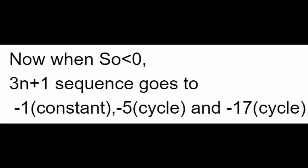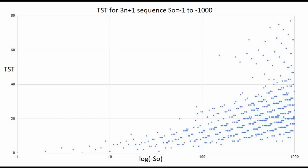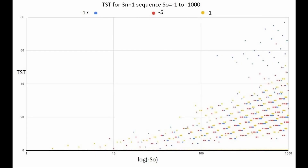When S0 is less than 0, the 3n plus 1 sequence goes to minus 1 (a constant), minus 5 (a cycle), and minus 17 (a cycle). Here's a graph of the log of minus S0 versus TST for S0 from minus 1 to minus 1,000. There is some organization, but it's nowhere near as good as when S0 is greater than 0. We can color-code the points: minus 17 in blue, minus 5 in red, and minus 1 in yellow.